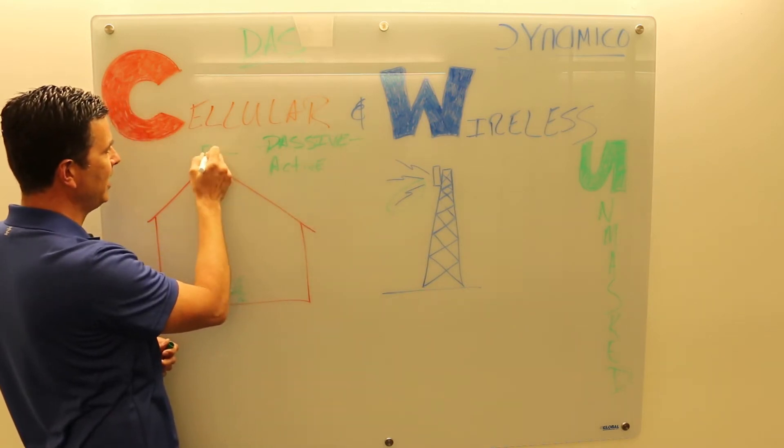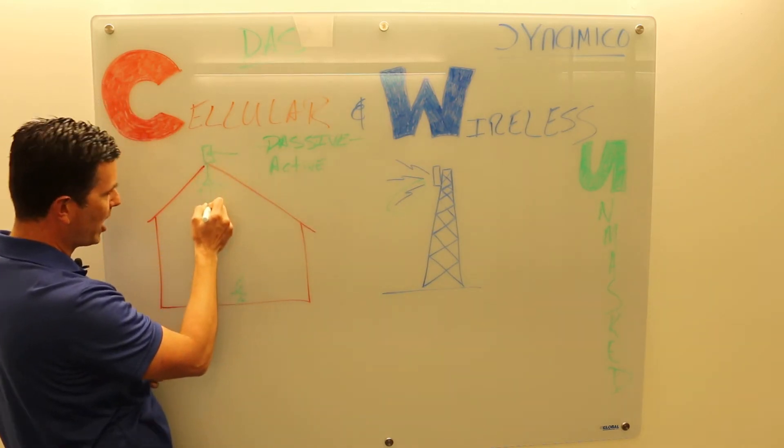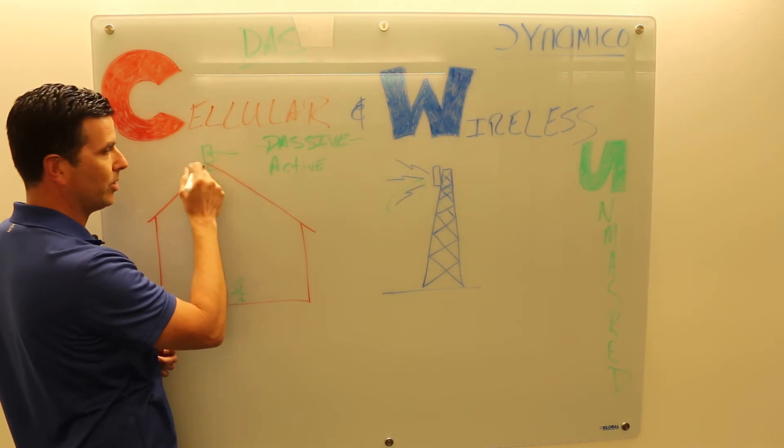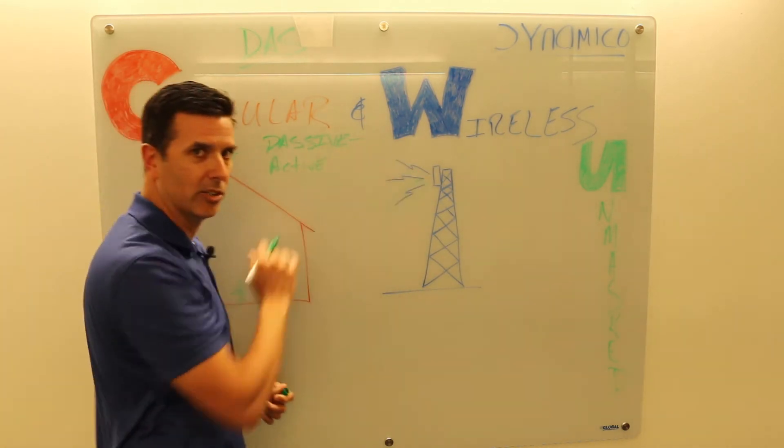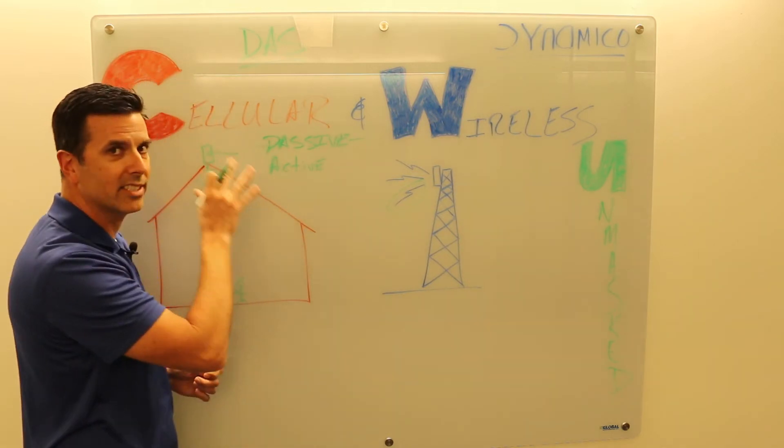The signals would come into this antenna, get brought into the building via the coax which is a passive component, then you'd be able to talk back to the cellular network. True passive DAS.